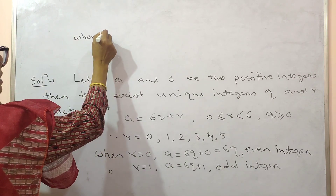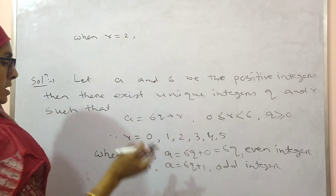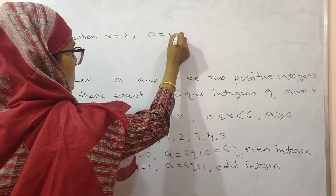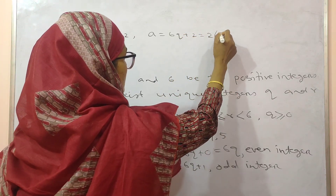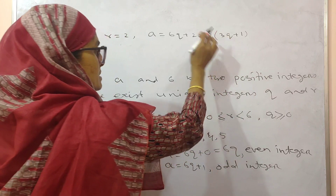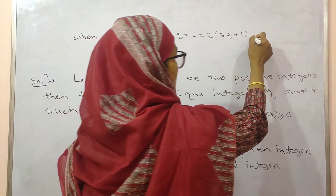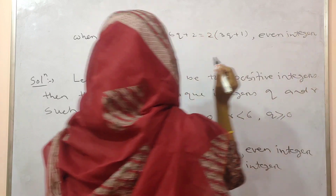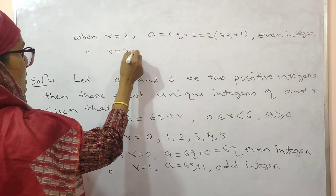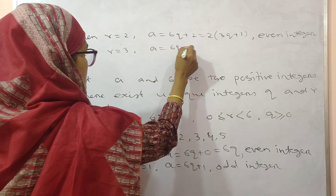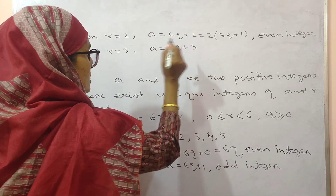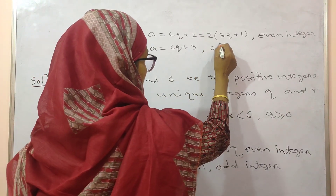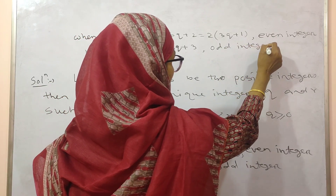When r equal to 2, you will get A equal to 6q plus 2. If you take 2 common, you will get 2 into (3q plus 1), so this is an even integer. Next, when r equal to 3, you will get A equal to 6q plus 3. Here you can take 3 common, so this is a multiple of an odd number — it is an odd integer.